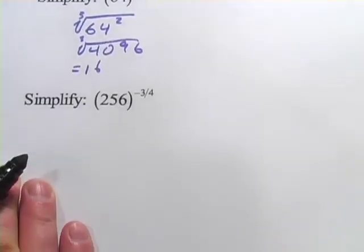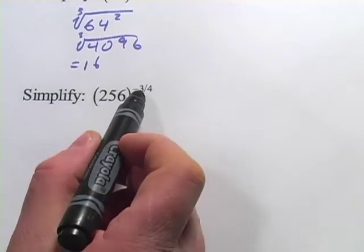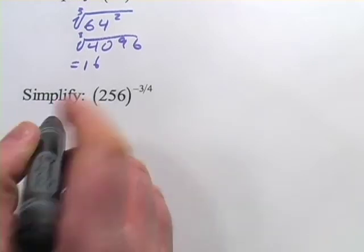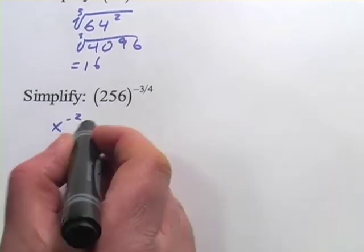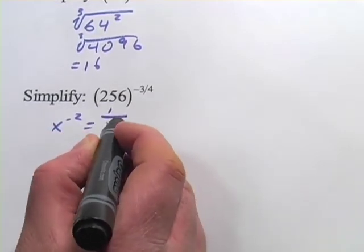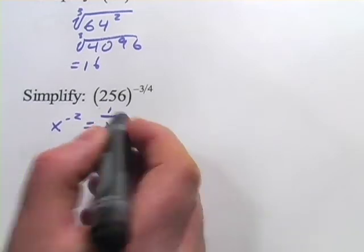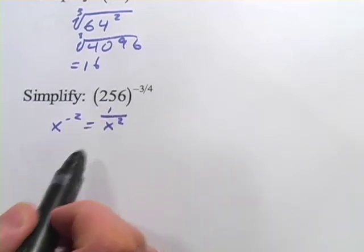All right, one more. Now, it's a little trickier here because we have not only a fractional exponent, we have a negative sign. And remember, when you have negative exponents, let's say we have x to the negative 2, that's the same thing as 1 over x to the positive 2. So that negative sign puts it on the bottom of a fraction.